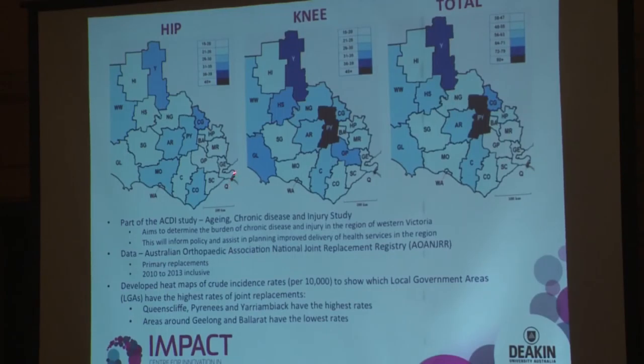The important places to note are Geelong, Ballarat, Warrnambool, and Horsham, to give you an idea of the size of our study region. Hip and knee maps are on the same scale, so in general there are more knee replacements than hip replacements. For hip replacements, the highest incidences are in Central Goldfields and in Queenscliff. For knee replacements, it's high in Pyrenees, Queenscliff again, and an area called Yarriambiack, which is a relatively remote location. For all replacements combined, again the same areas stand out: Pyrenees, Queenscliff, and Yarriambiack.